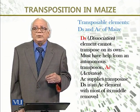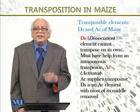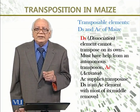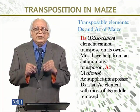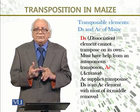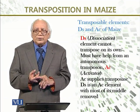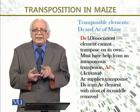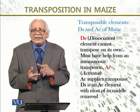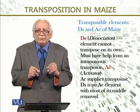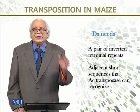The transposable elements in maize — the Dissociation (Ds) element and the Activator (Ac) — work together. The Ds element cannot transpose on its own; it cannot transpose by itself. It must have help from an autonomous transposon, an independent transposon, which we call the Activator. Ac supplies the transposase. Ds is essentially an Ac or Activator element with most of its middle region removed.